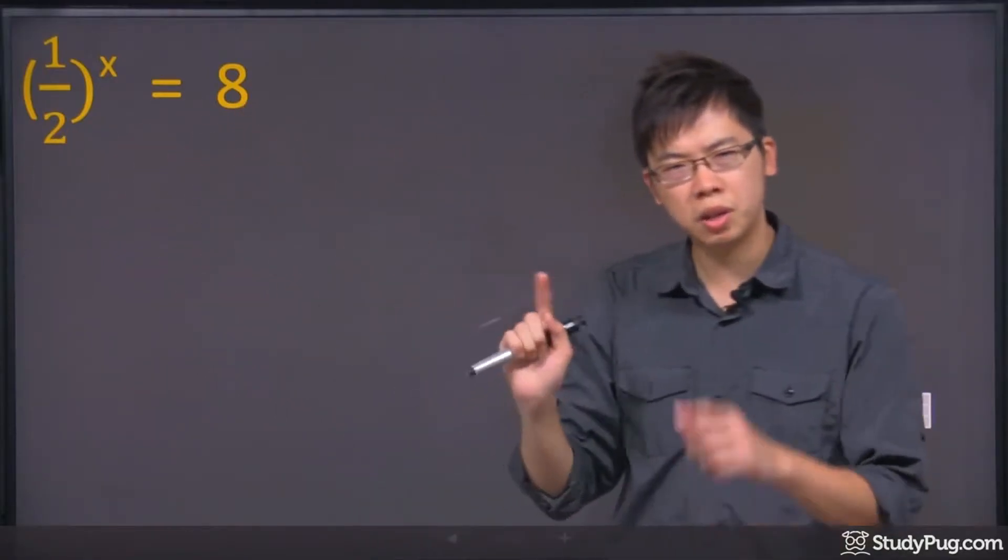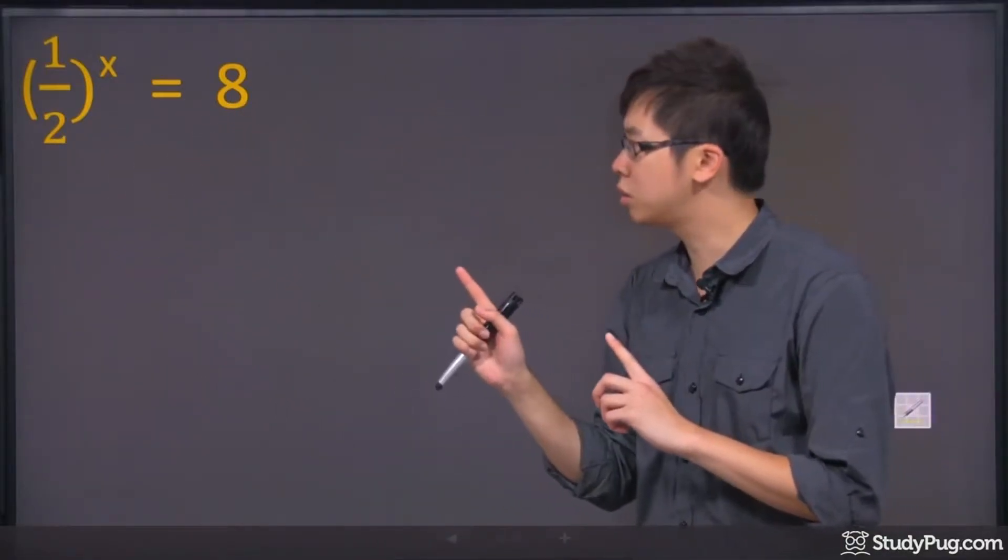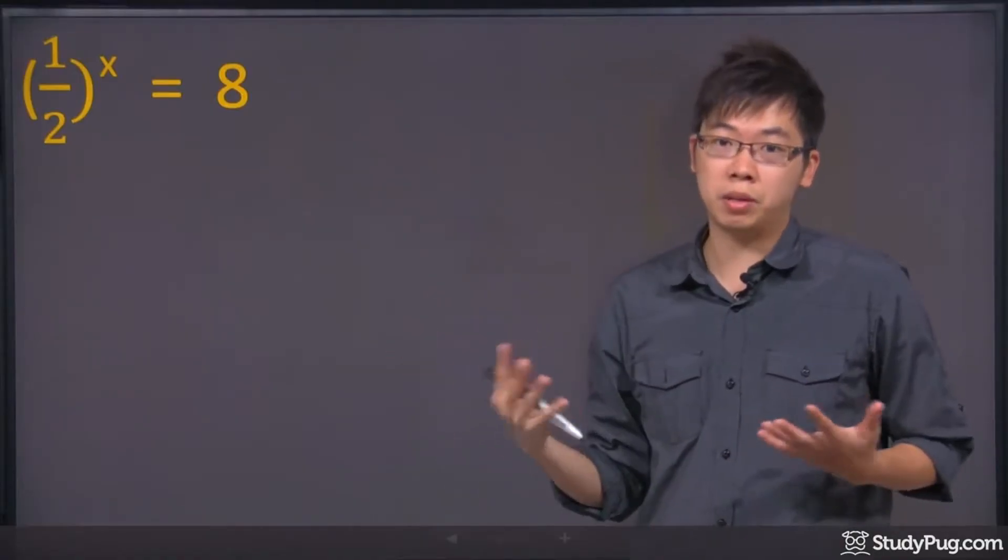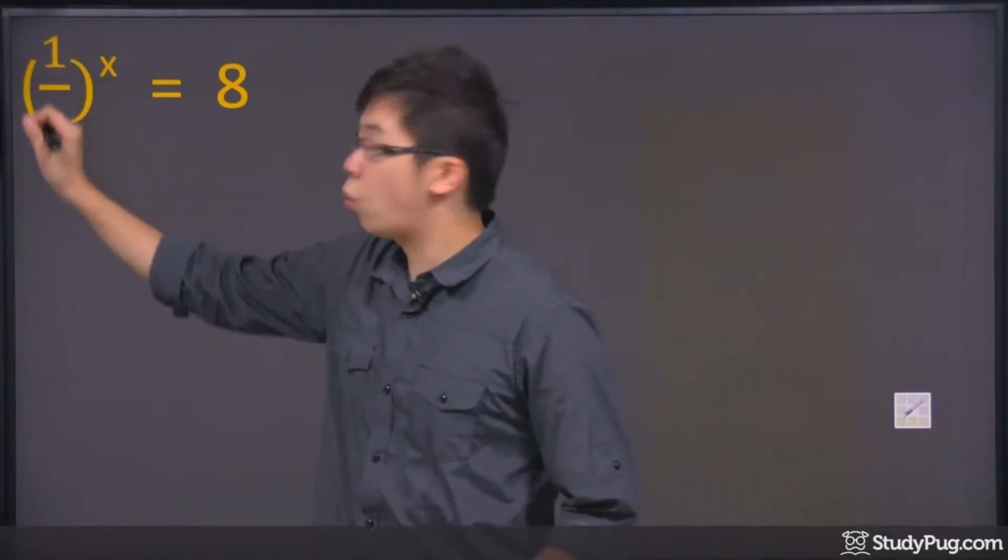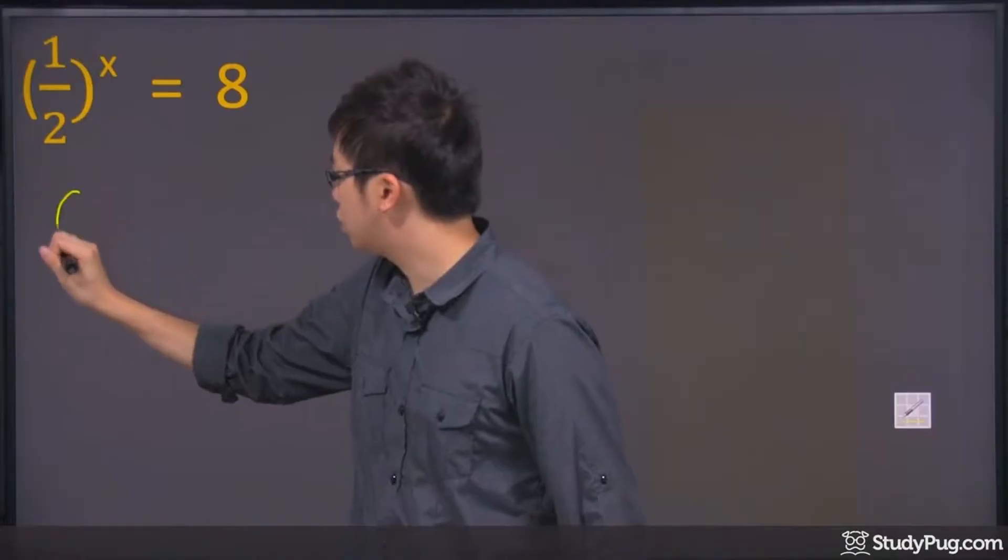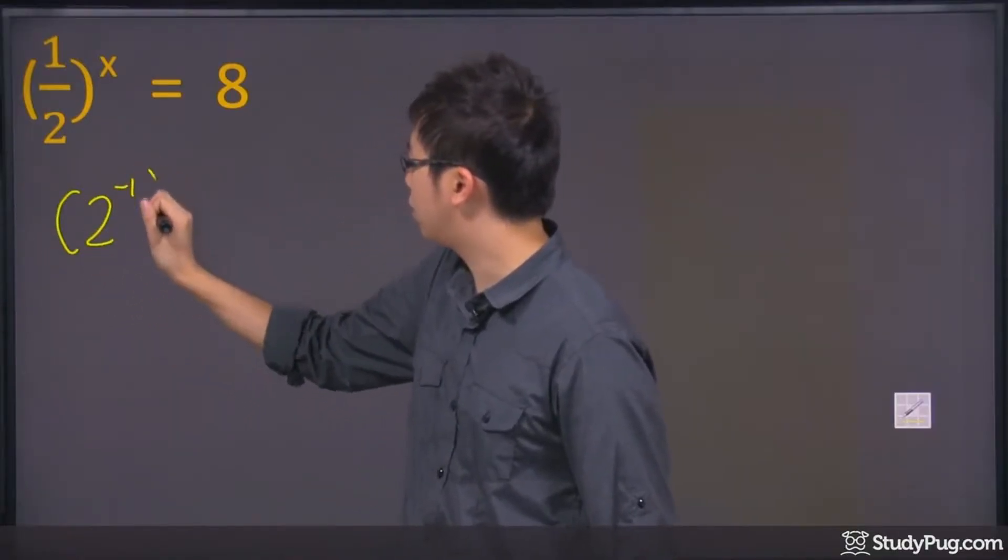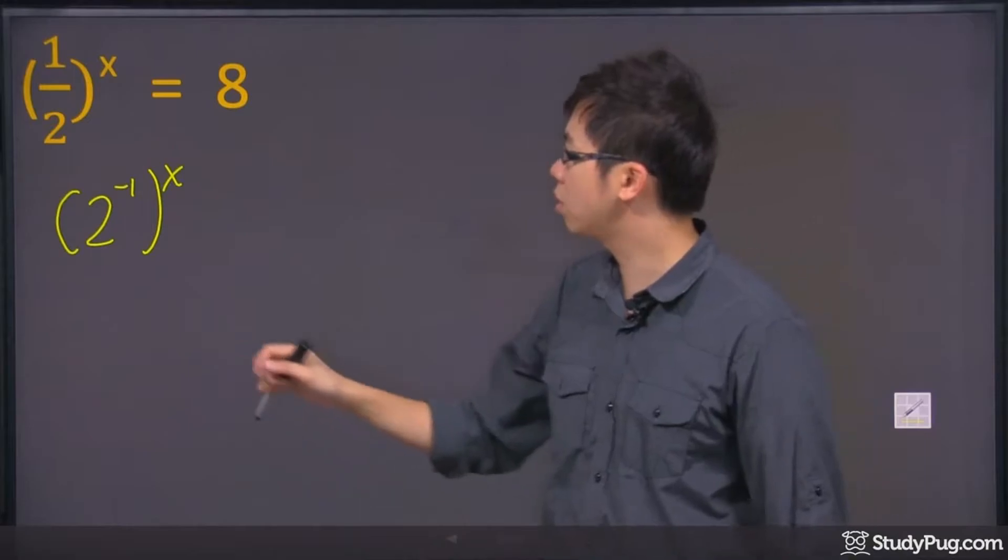You see that 2 and 8, there's some kind of similarity between these two guys. They all have the base of 2. So the 1 over 2, you can change it into 2 to the power of negative 1. Hopefully you can understand what just happened there.